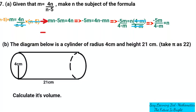So question 7 goes as follows: the diagram below is a cylinder of radius 4 cm and height 21 cm, take pi to be 22 over 7.